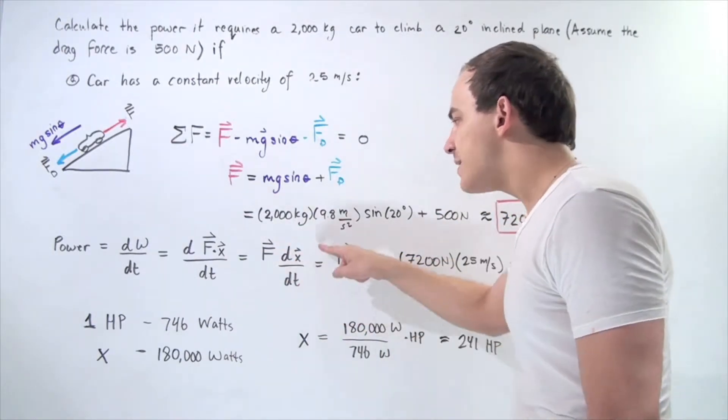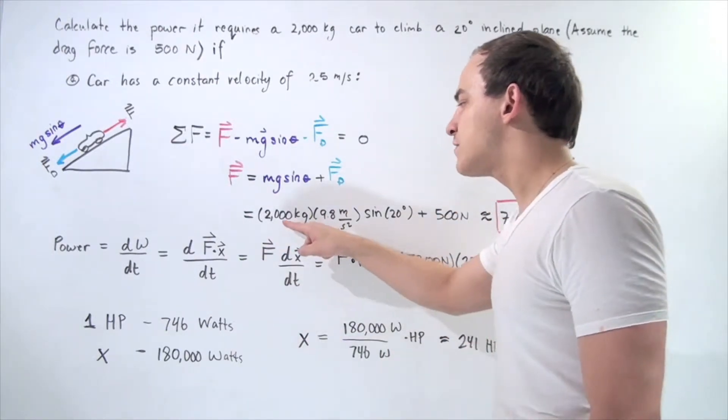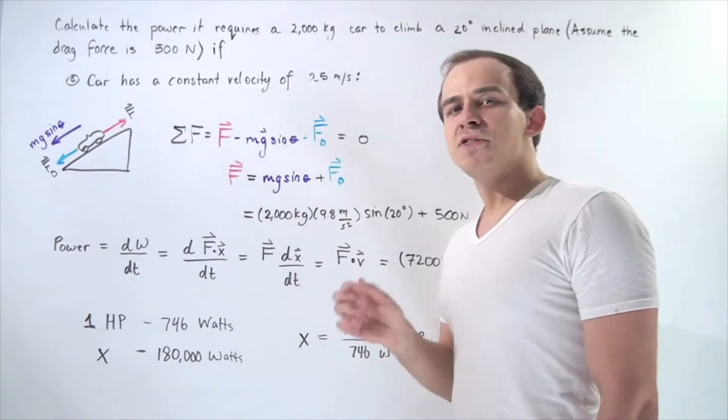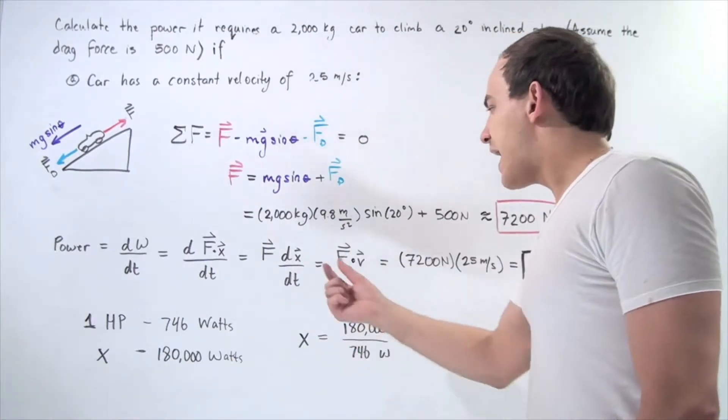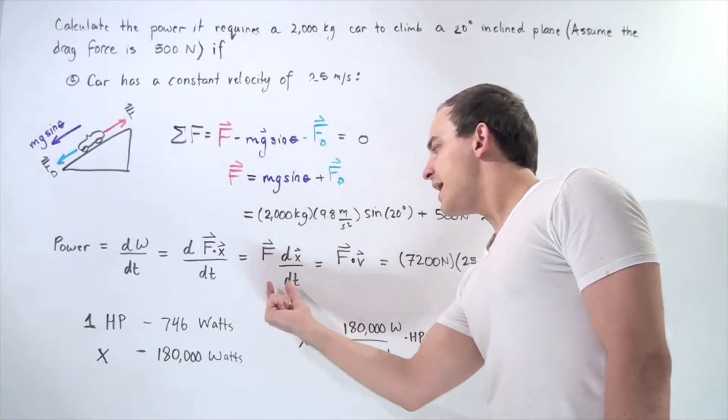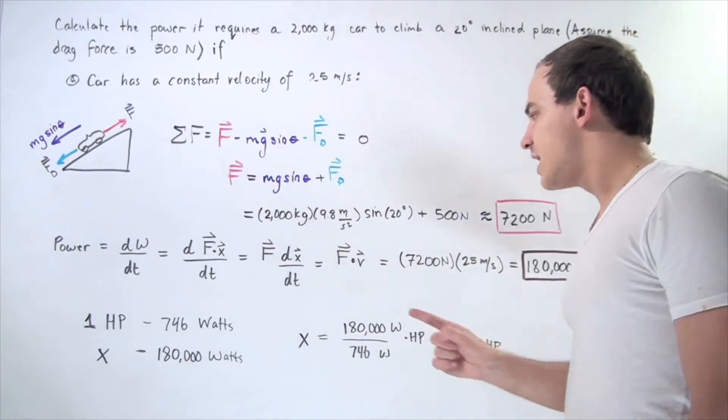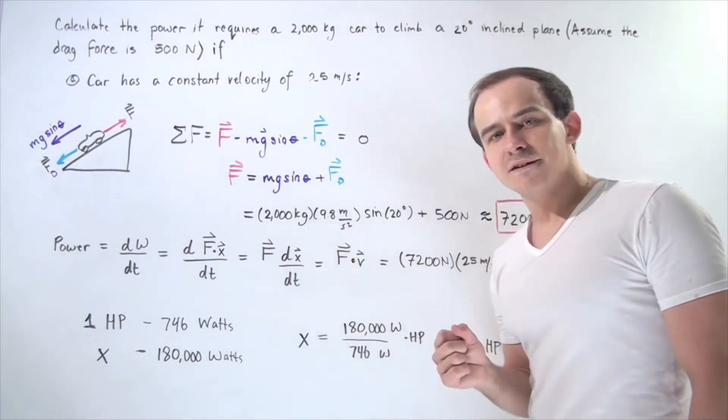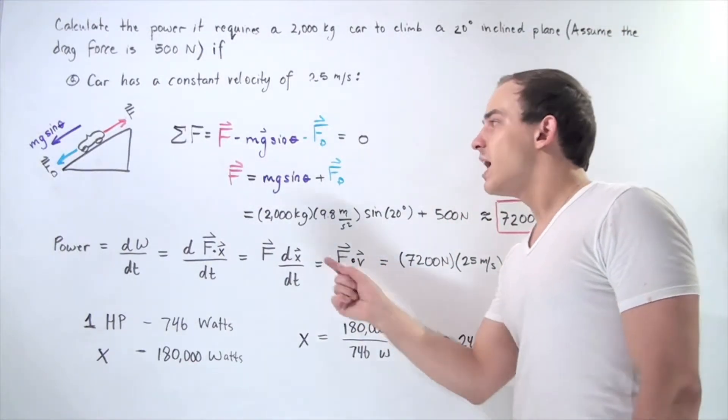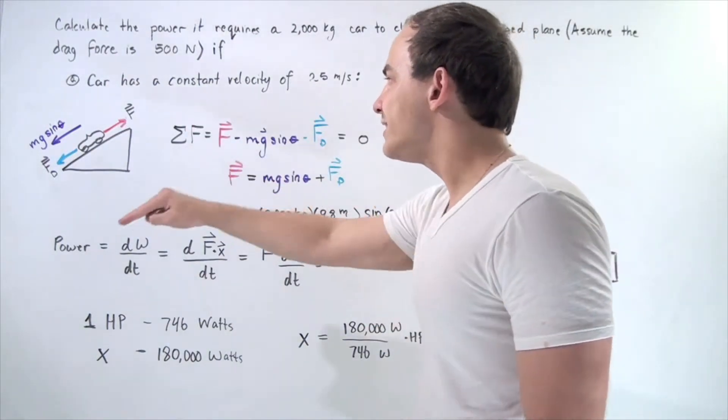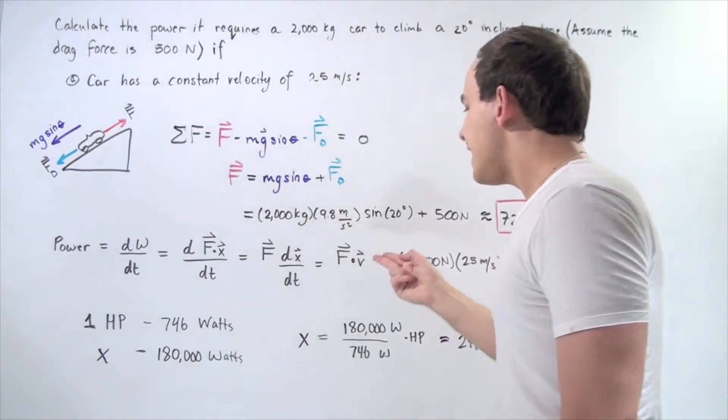This term is actually the rate of change of displacement, which is the same thing as velocity. That means this is the same thing as taking the dot product of the force and velocity vector. Because they point along the same axis, they point in the same direction, the angle is zero.